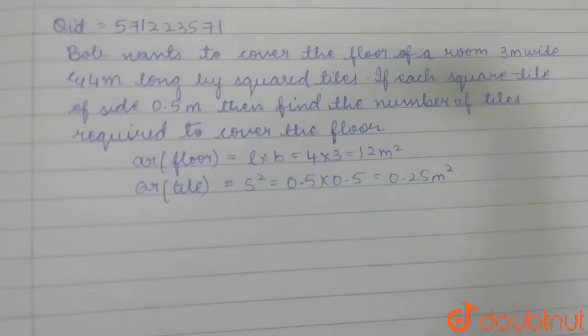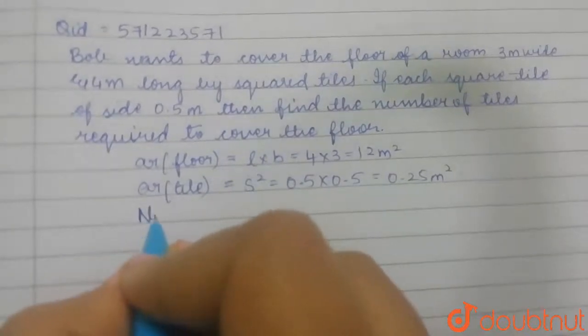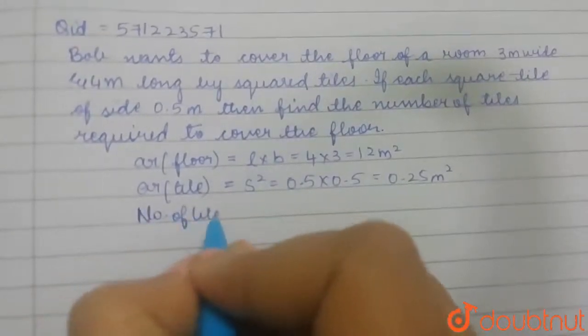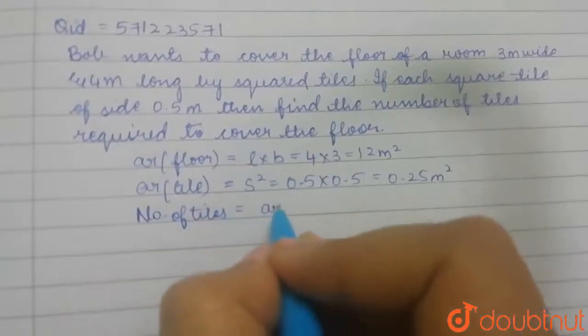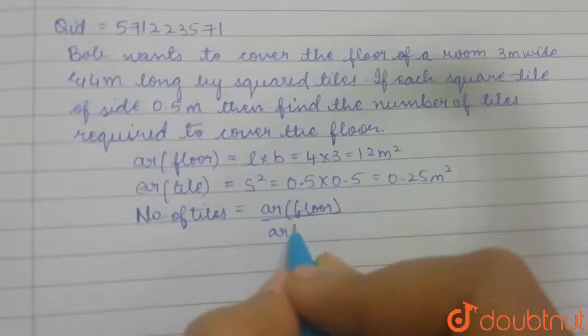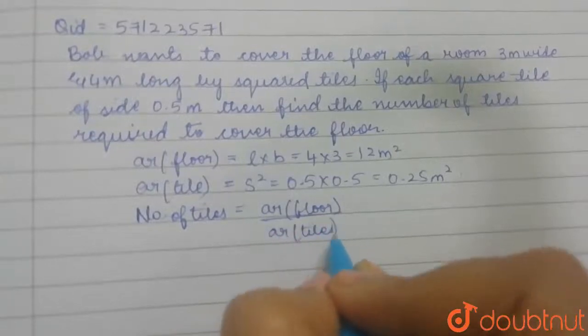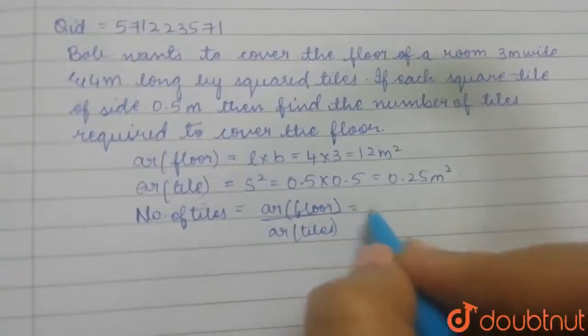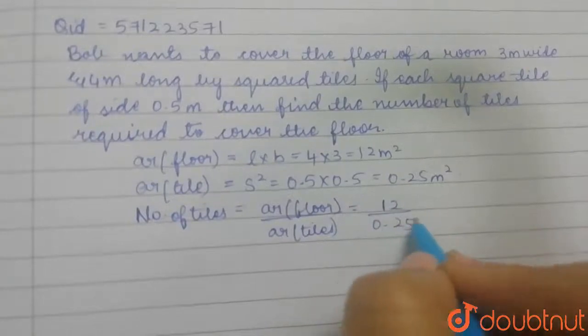So now here we are supposed to find out the number of tiles required to cover the floor. Number of tiles is given by the formula: area of the complete floor divided by area of the tiles. This will give you the number of tiles. Here it is 12 by 0.25.